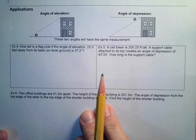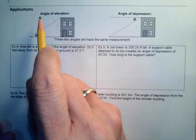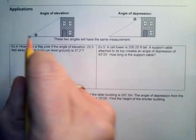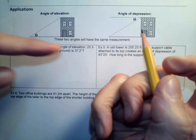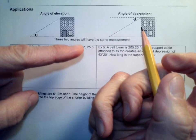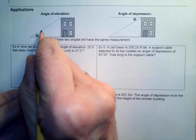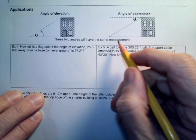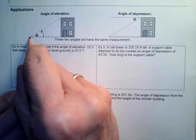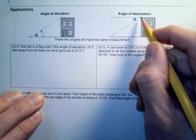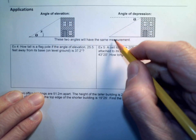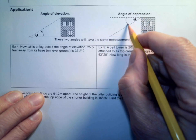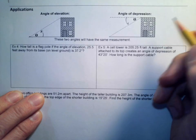When we do word problems involving right triangles, we have something called an angle of elevation — that means you're on the ground looking up. You could instead be at the top of a building looking at something down below, and that would be called an angle of depression, because you're looking down.